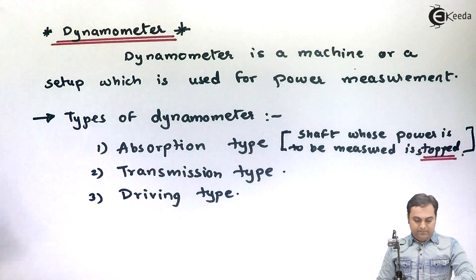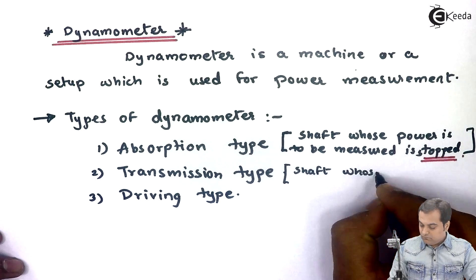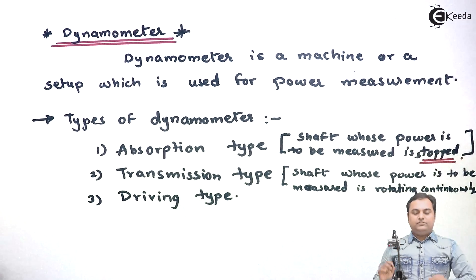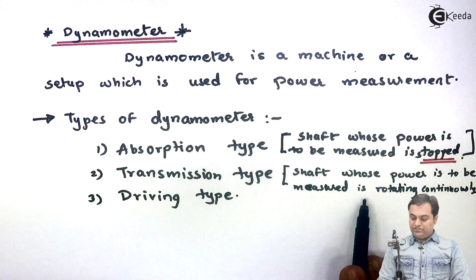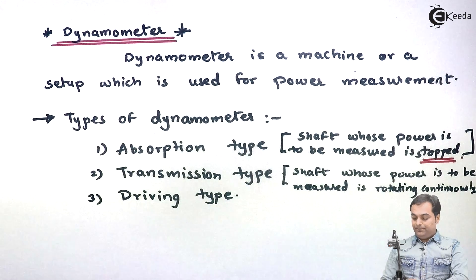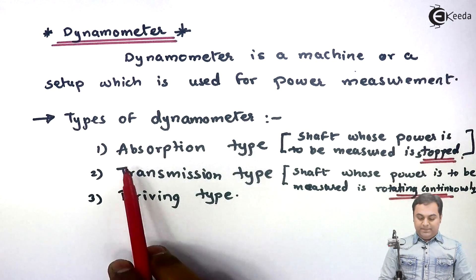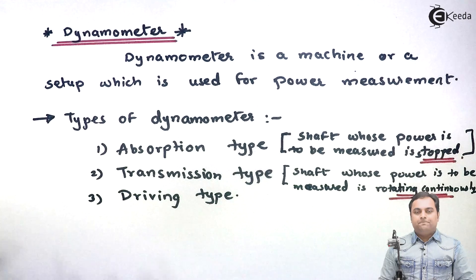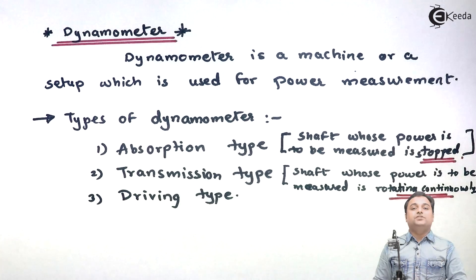Next is transmission type. In transmission type dynamometers, the shaft whose power is to be measured is rotating continuously. Unlike absorption type where the shaft was stopped, in transmission type the shaft is rotating continuously and power is measured.